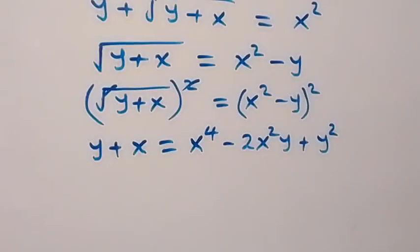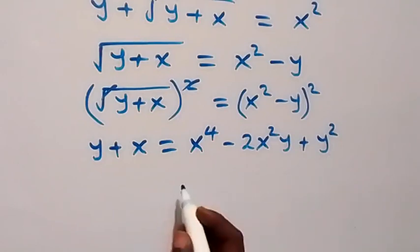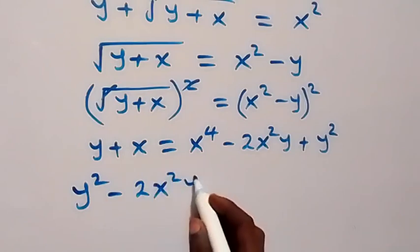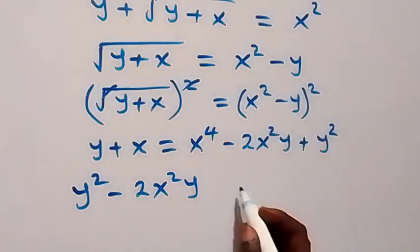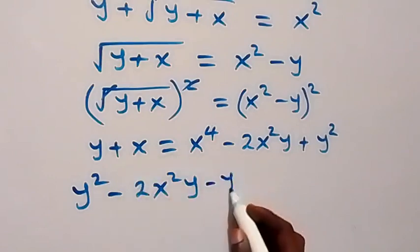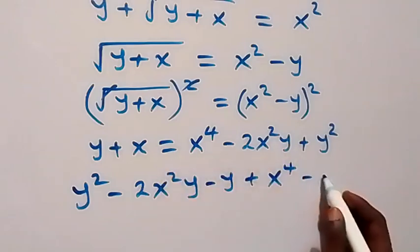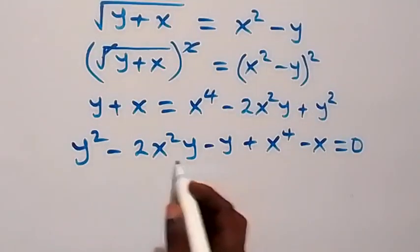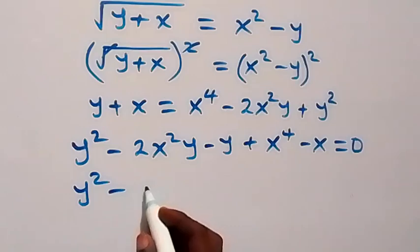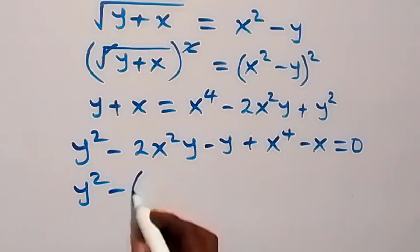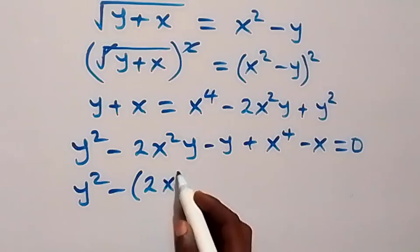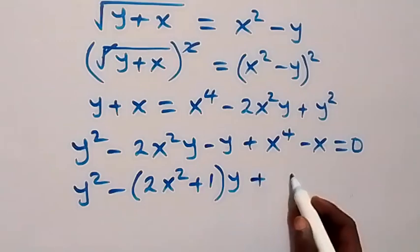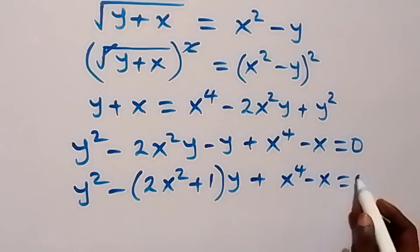We can bring everything to one side and arrange in terms of y. The leading variable here is y, so we have y squared, then minus 2x squared y. Taking the remaining terms to the other side: minus y, then plus x raised to power 4, then minus x, equals to 0. We can factor: y is common, then minus is common as well, giving us y squared minus bracket 2x squared plus 1 close bracket times y, plus x raised to power 4 minus x, equals to 0.